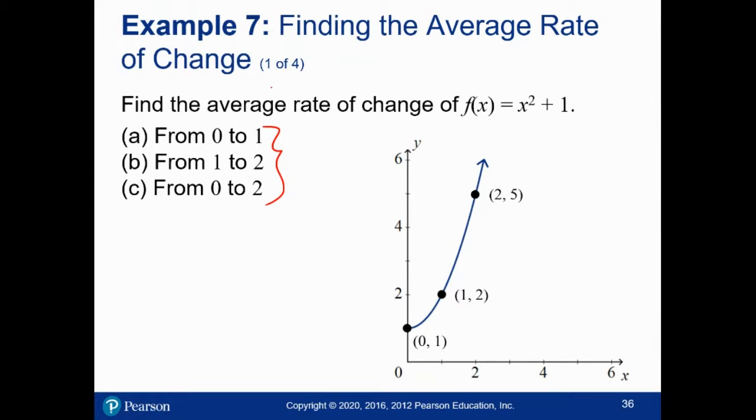Okay, so remember, we're fundamentally computing F of B minus F of A over B minus A. So compute this for these three examples using the points that are labeled on the graph. And I'll pause and then we'll double check.